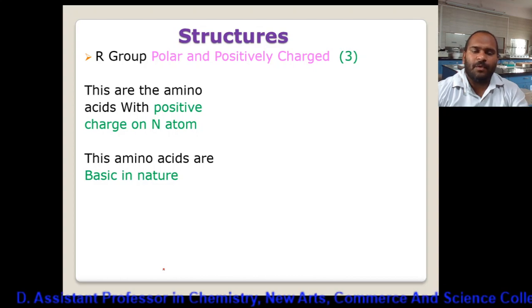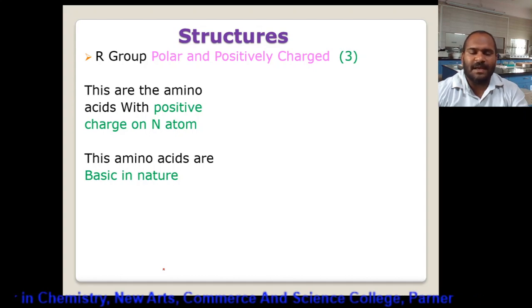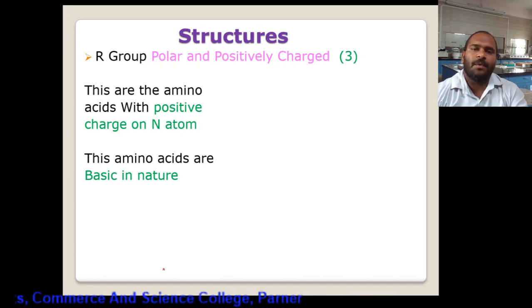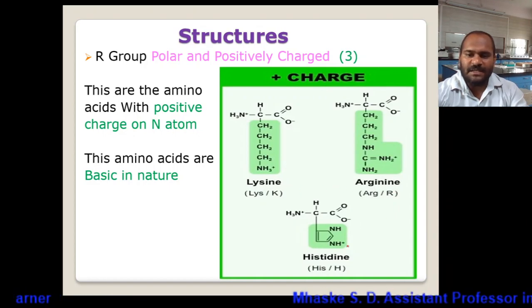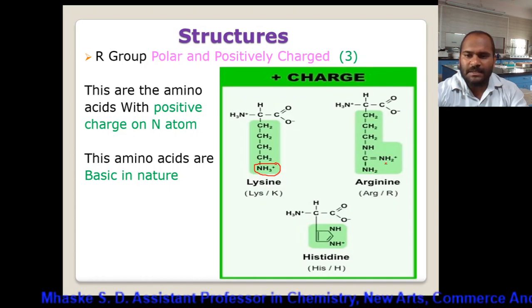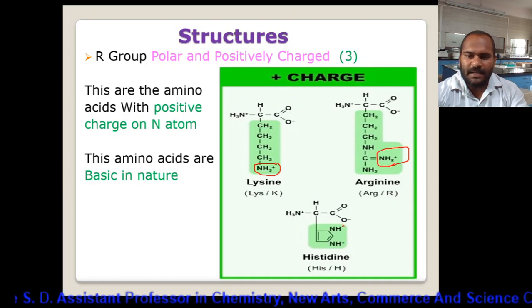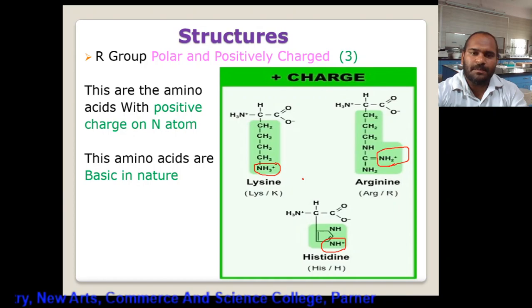Next class: R group polar but positively charged. These amino acids have a positive charge on the nitrogen atom. Most of these amino acids have an amino or amide group where there is a positive charge on nitrogen, making them basic in nature. There are three: lysine, arginine, and histidine. Lysine has NH3+, arginine has NH2+, and histidine has an NH within its ring.